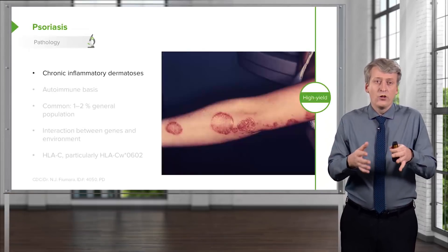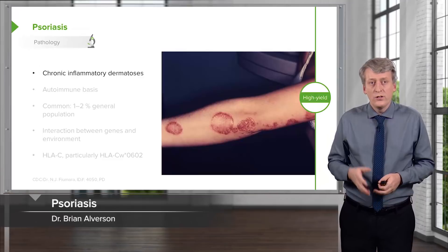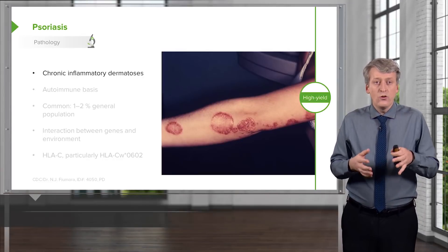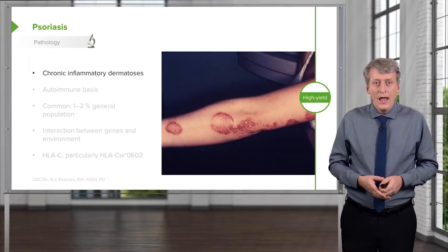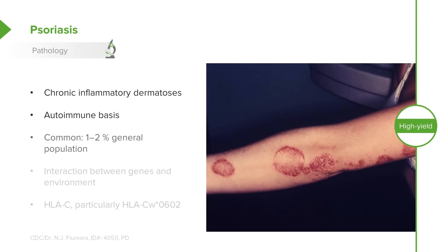Let's move to another common childhood inflammatory problem: psoriasis. This is one of the chronic inflammatory dermatoses and it is autoimmune in nature. It happens in 1 to 2% of the general population with different forms and different severity. This is an interaction between genes and the environment. Patients with HLA type C, particularly HLA CW0602, have an increased risk of psoriasis, and homozygotes have an even further 2.5 times higher risk than heterozygotes.